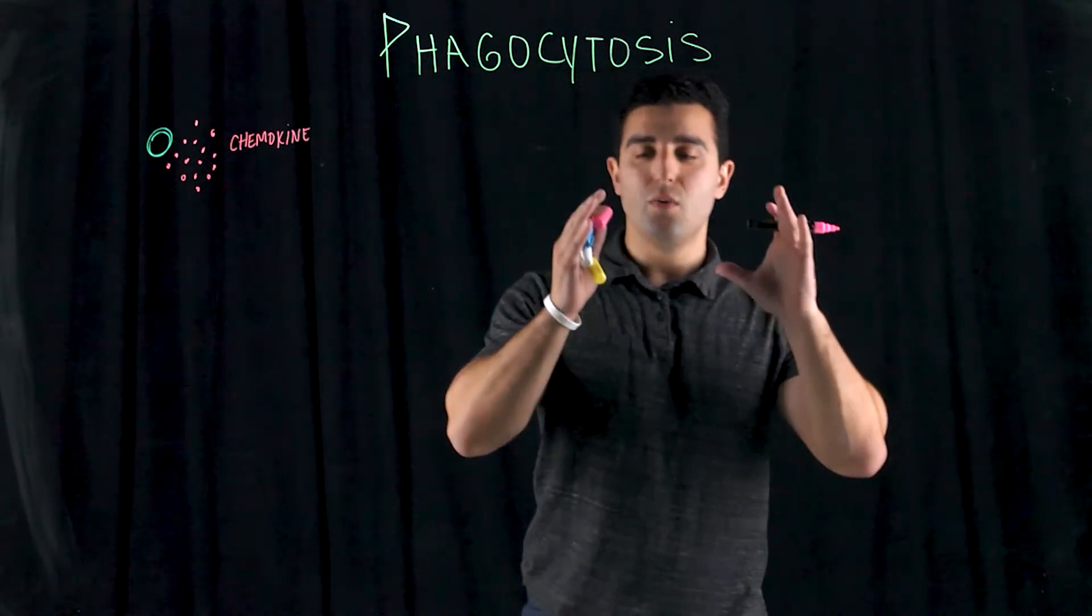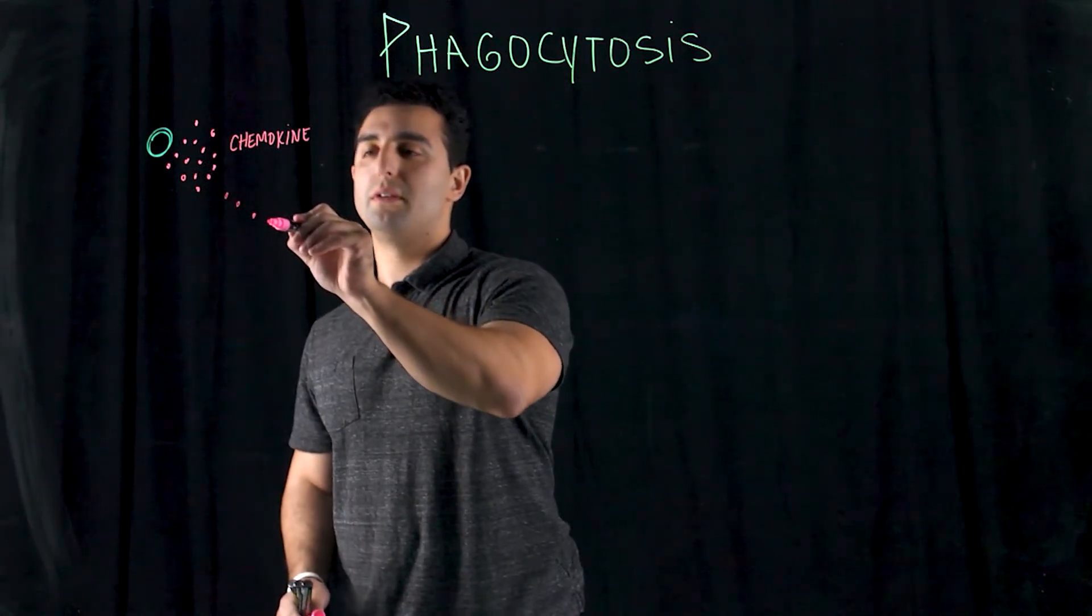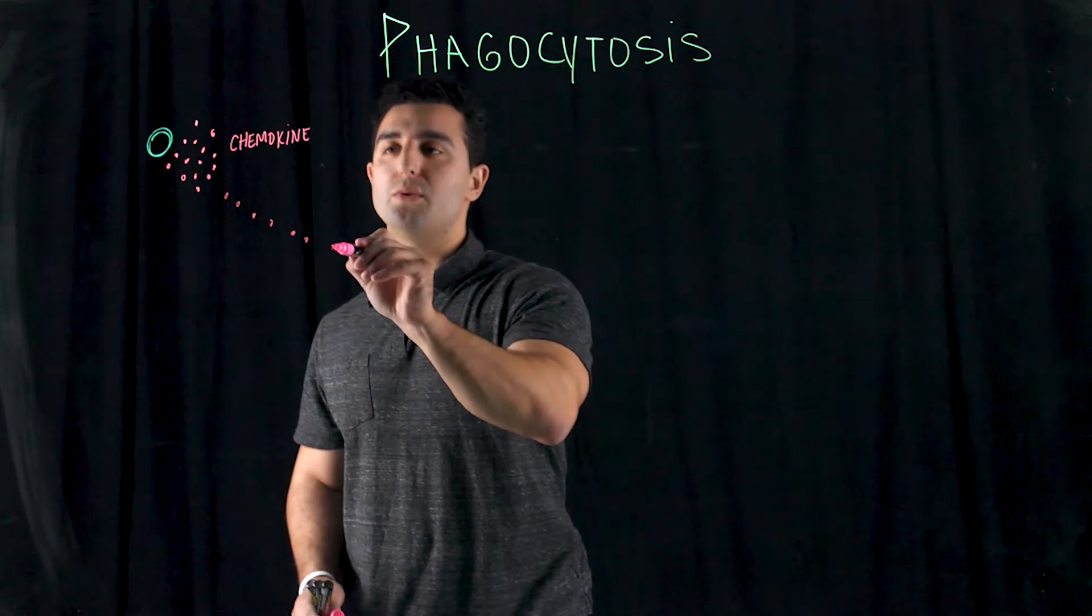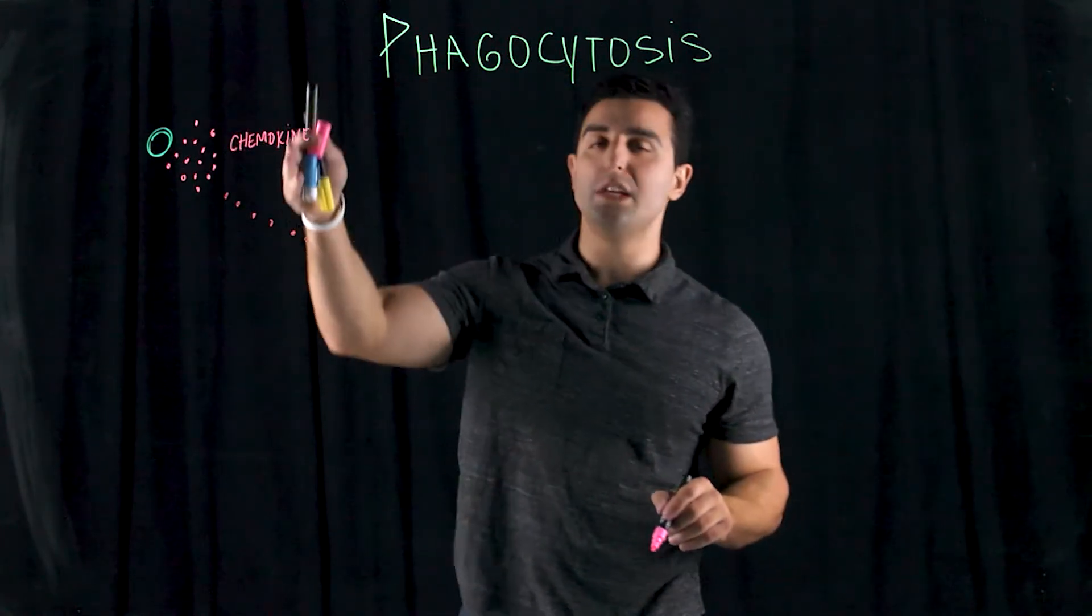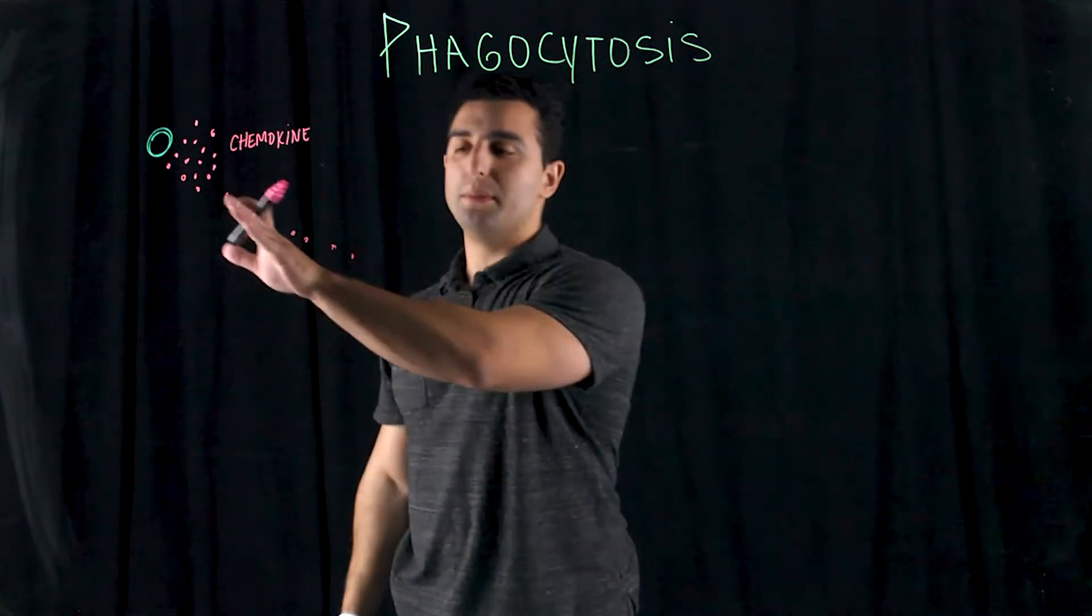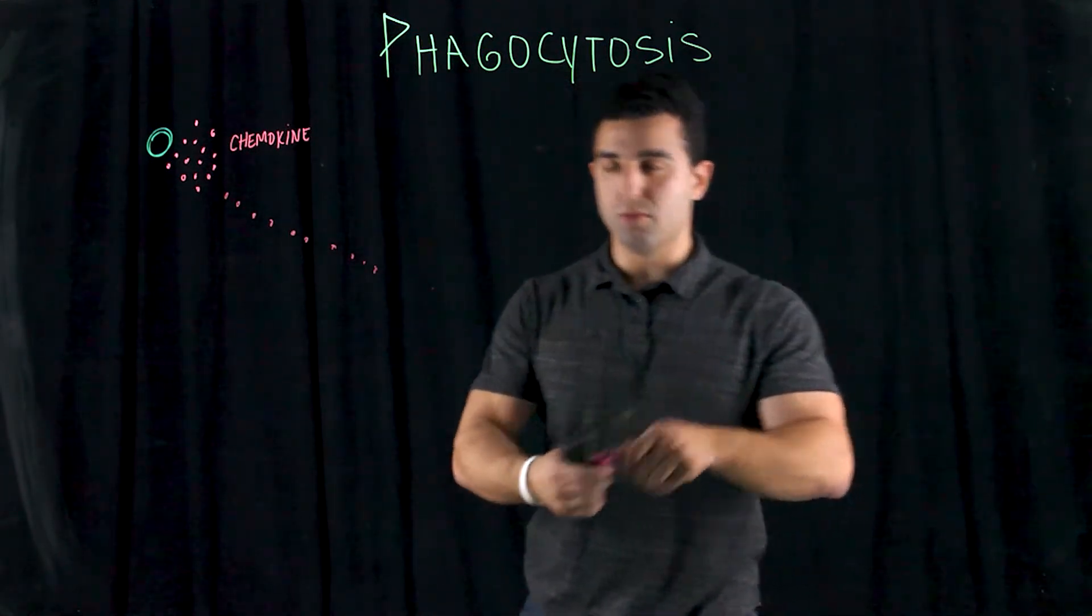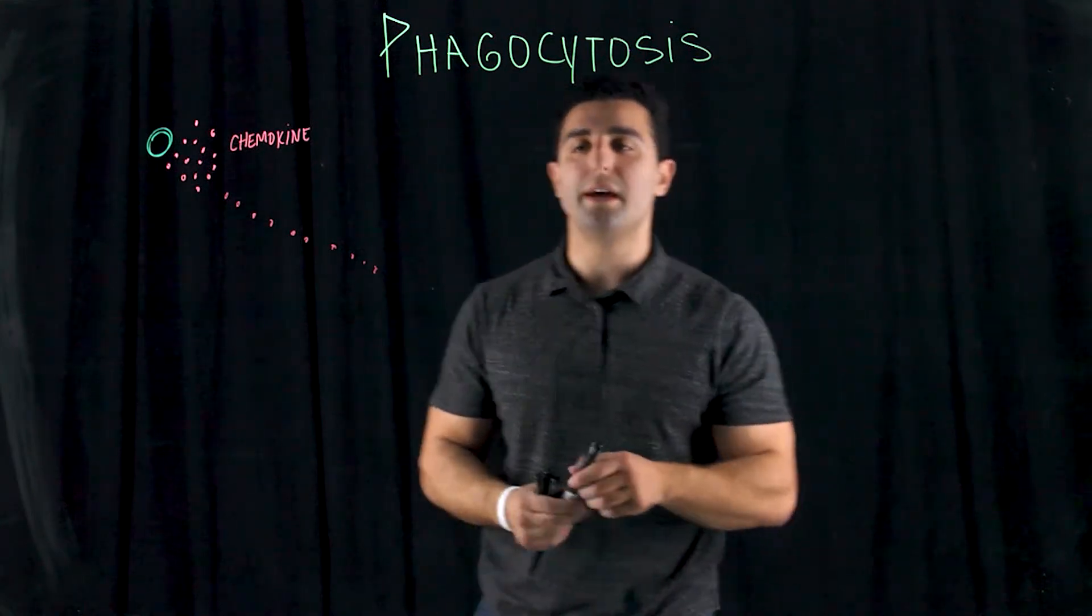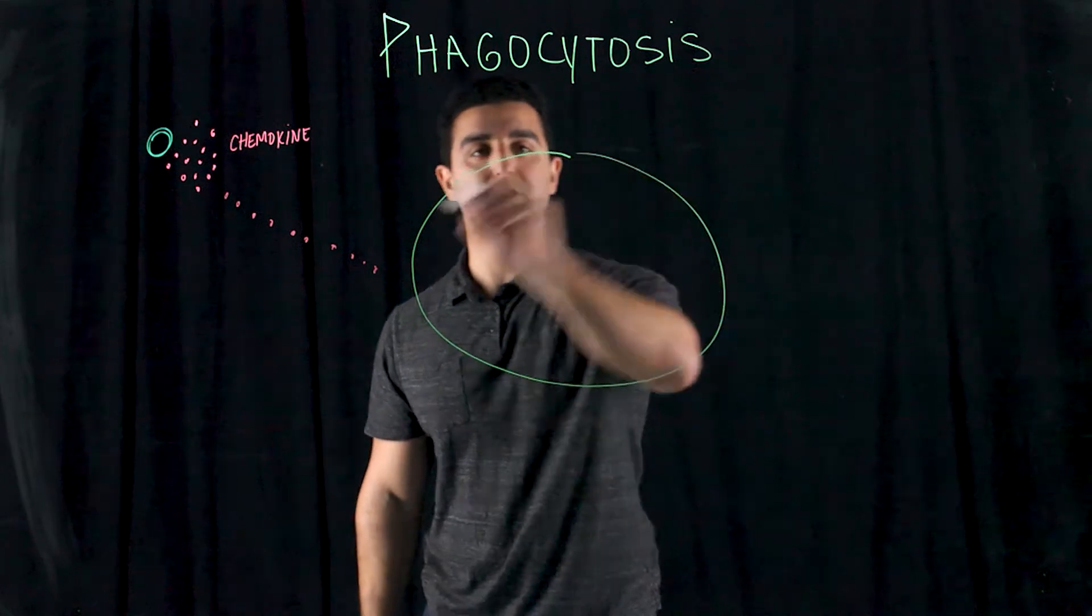So chemotaxis basically is where you have the movement of these immune cells that are created from these chemicals. So the cytokines, specifically here the chemokines, are released into the bloodstream. Now you have this little chemical trail that is created for the immune cells. So we have, for example, like a phagocyte here. So a presence of a phagocyte here.